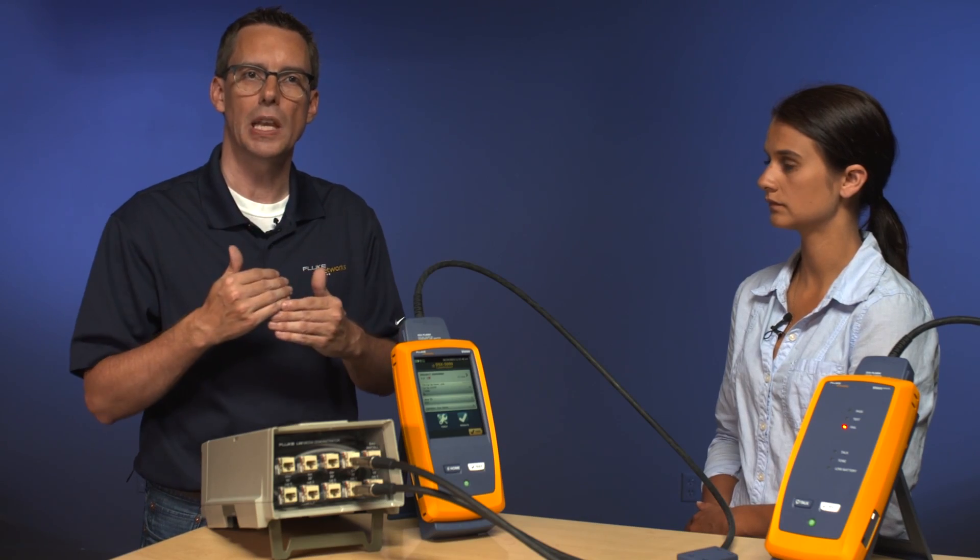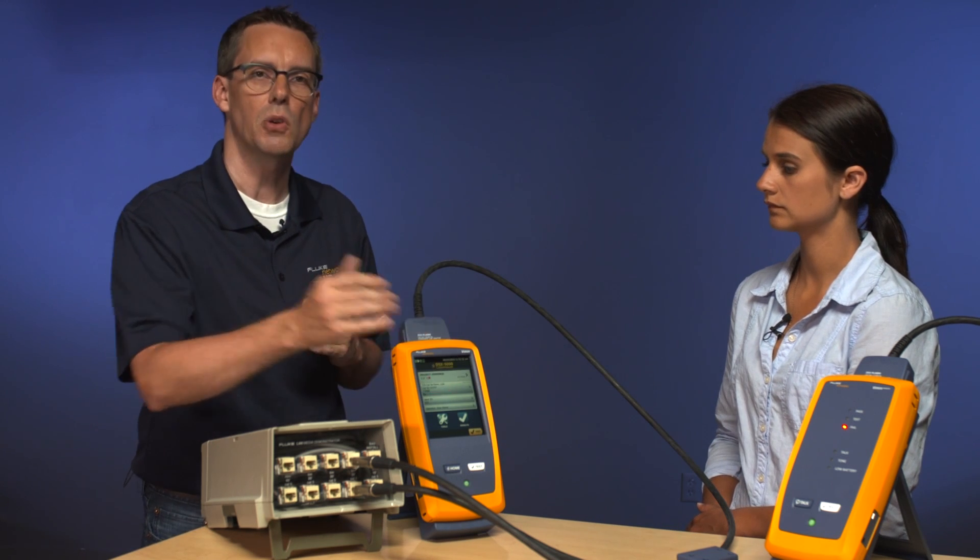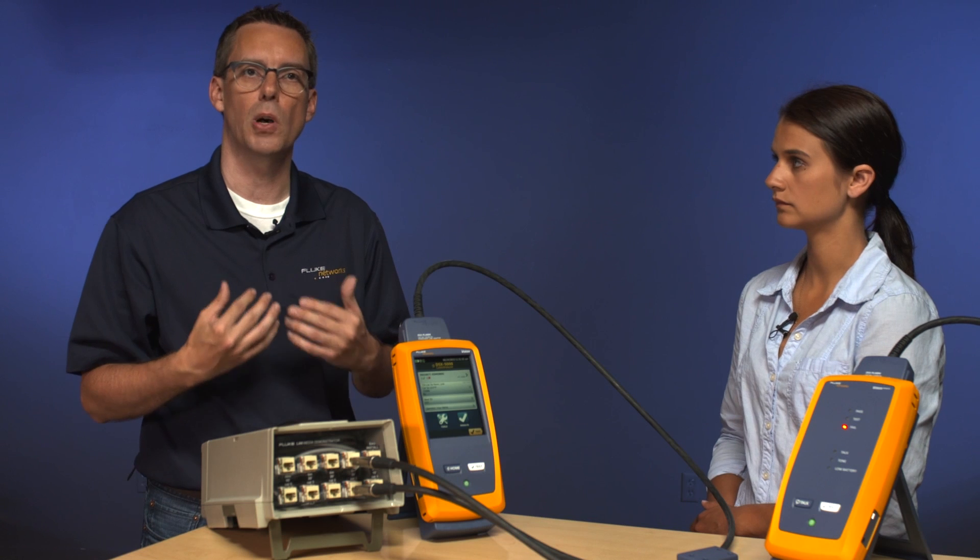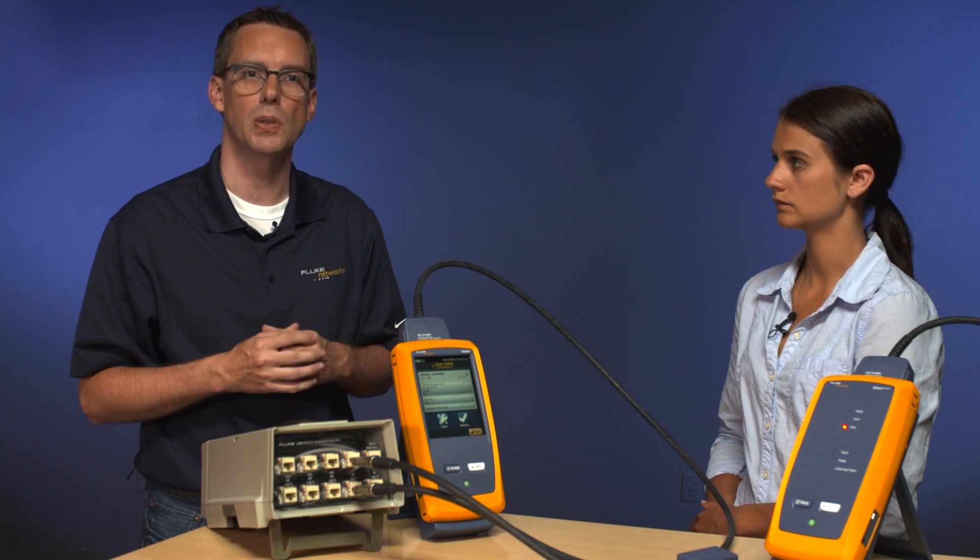So because we pre-configured all the cable IDs, if you only get halfway through your cable IDs, then you're only going to see 50% here. It really reduces the possibility of missing links that you're supposed to test.